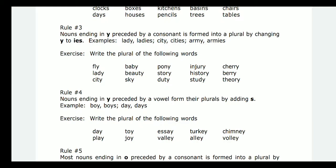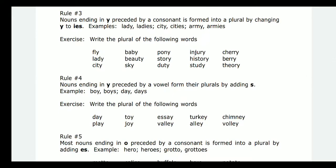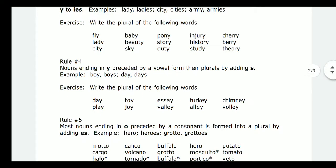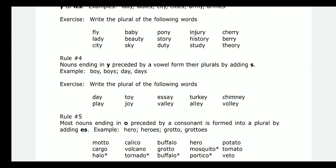Letters like R, D, T, K are consonants. So when the Y is preceded by a consonant, you change Y to IES. For example: cherries, ladies, beauties, stories, histories, berries, cities, skies, duties, studies, and theories. That is the fourth rule.